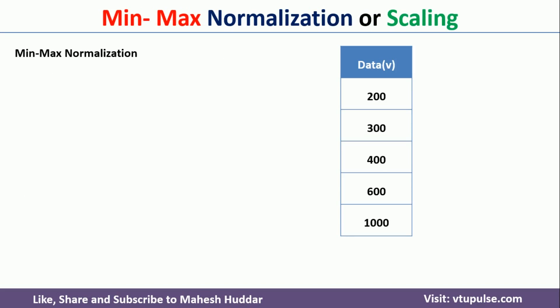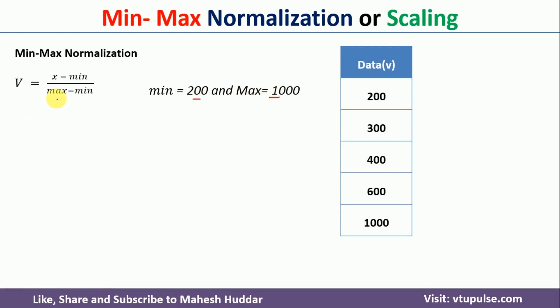First, we will discuss min-max normalization. In min-max normalization, we need to know what is the minimum value as well as the maximum value. In this case, the minimum value is 200 and the maximum value is 1000. Next, we need to use this formula to calculate the normalized data: V = (x - min) / (max - min), where x is the data point, min is the minimum value, and max is the maximum value.